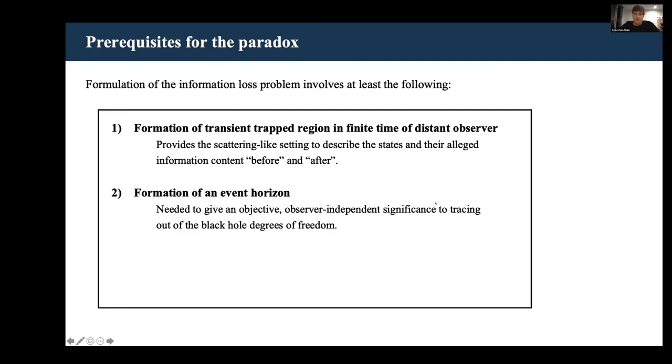Secondly, we need an event horizon. The event horizon is needed because it's a global definition of the boundary of a black hole, and so it gives an objective observer-independent meaning to tracing out degrees of freedom.